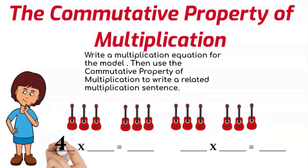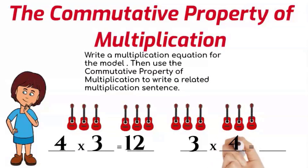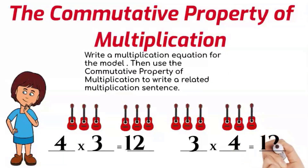There are four groups, and there are three guitars in each group. The total amount of guitars — the product — is twelve. Now we flip the factors: three times four equals twelve. The product still remains the same.